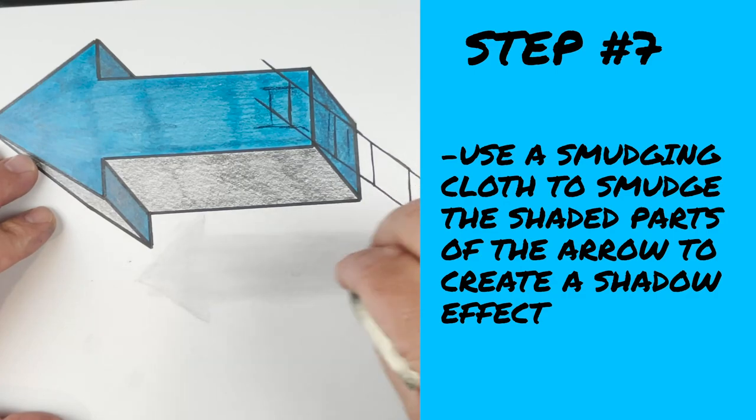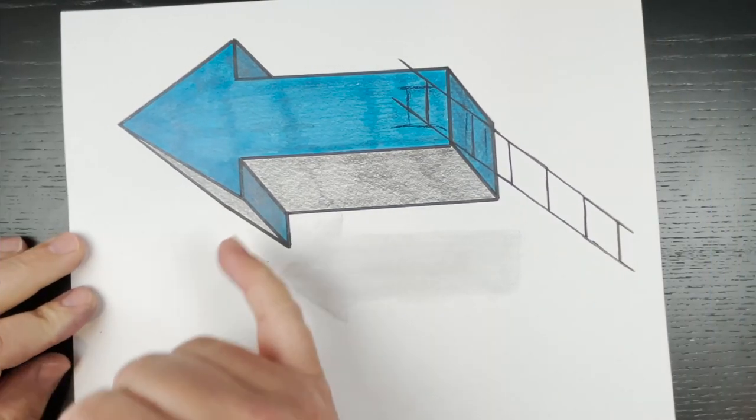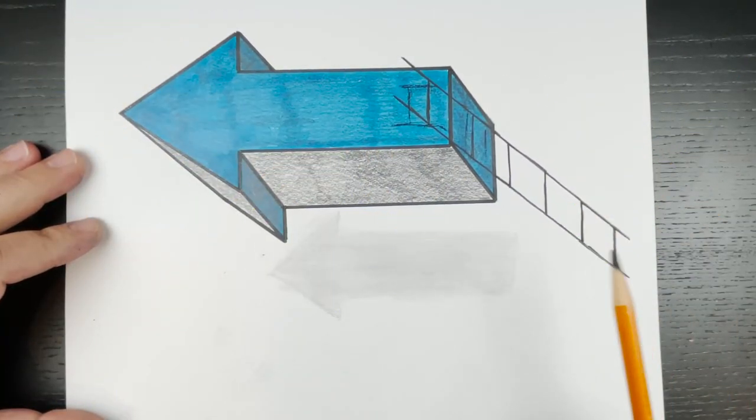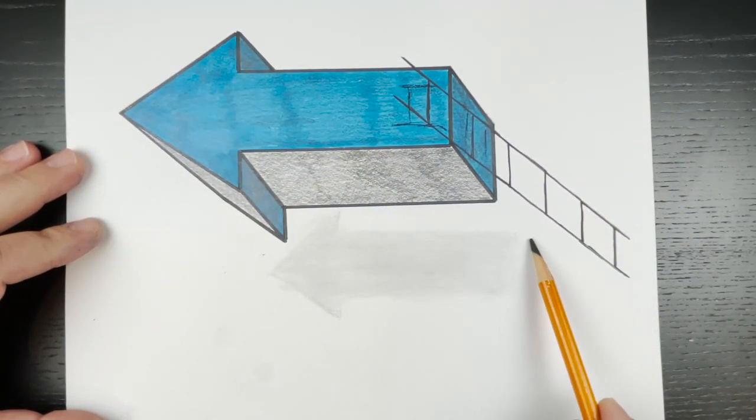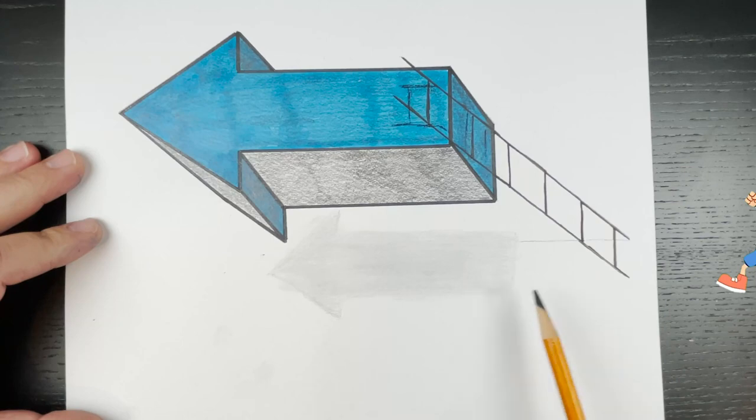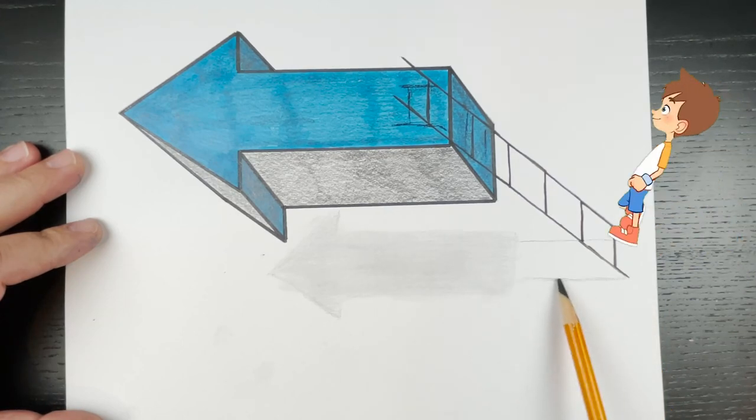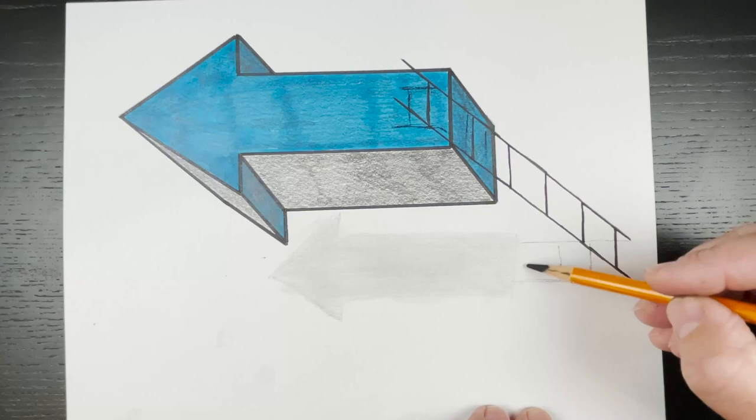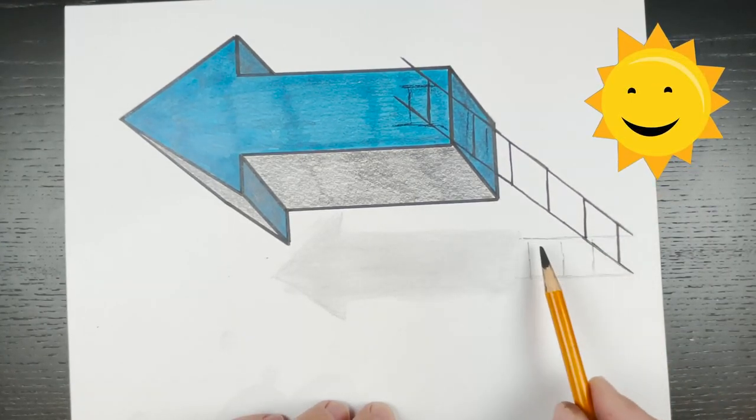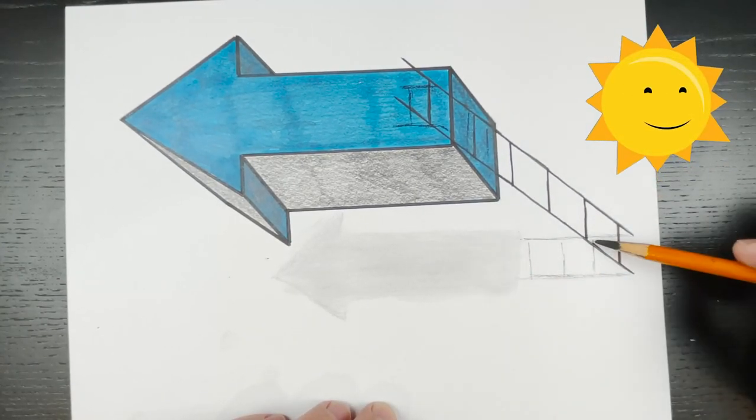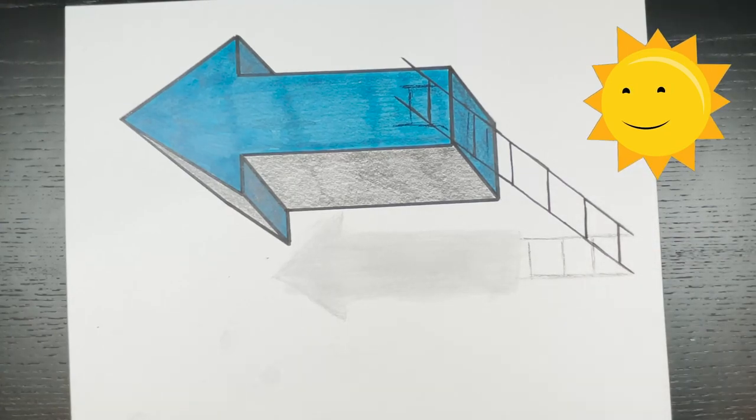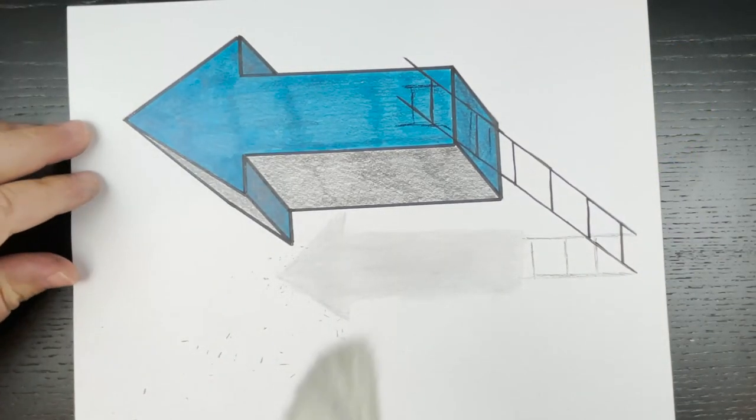I'm going to go ahead and use my smudging cloth. You guys have seen me use that before. Feel free to do this with your finger or a paper towel - I use my smudging cloth, I like it better. Next thing I'm going to do is take my charcoal pencil and make a little shadow of my ladder. You see how it kind of comes from the corner of the actual ladder and then, picture the sun going down and casting a shadow on it, it's throwing it down. We've got to make it look a little bit realistic.